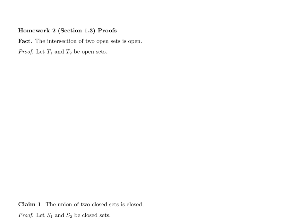I know that my proof should end with the statement: therefore, the intersection of T1 and T2 is open. The way I'm going to be able to make that conclusion is going to be based on the definition of open.